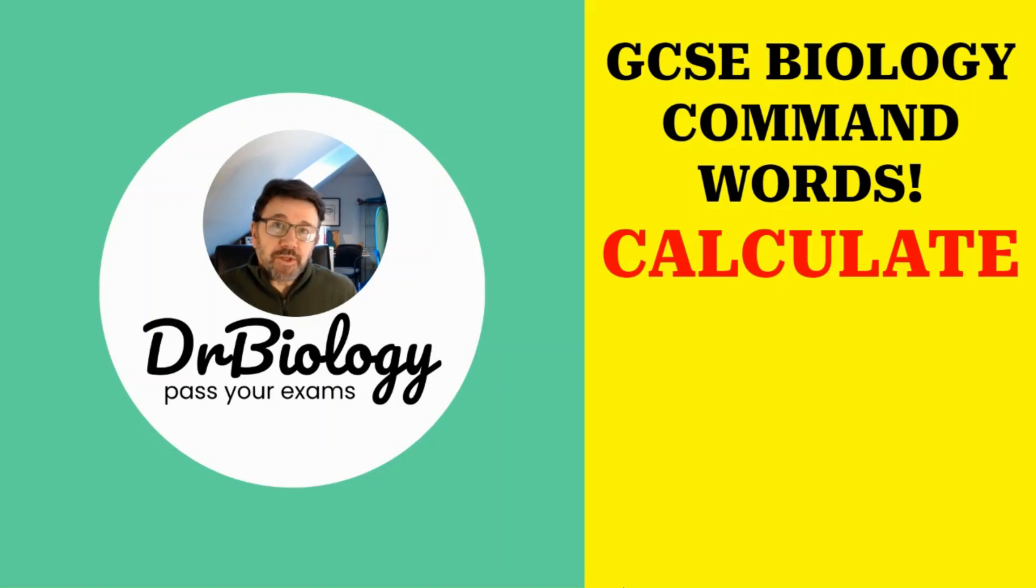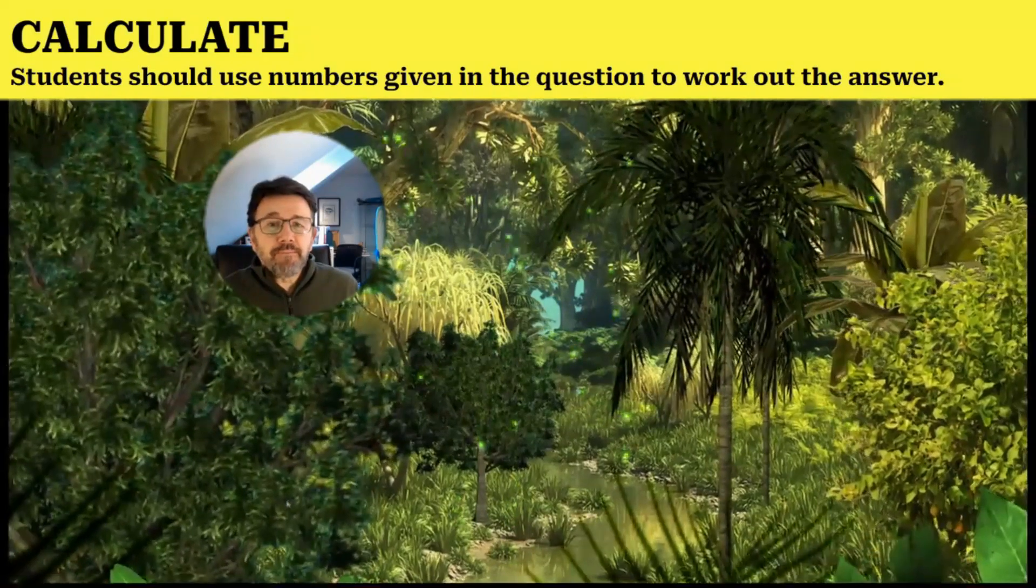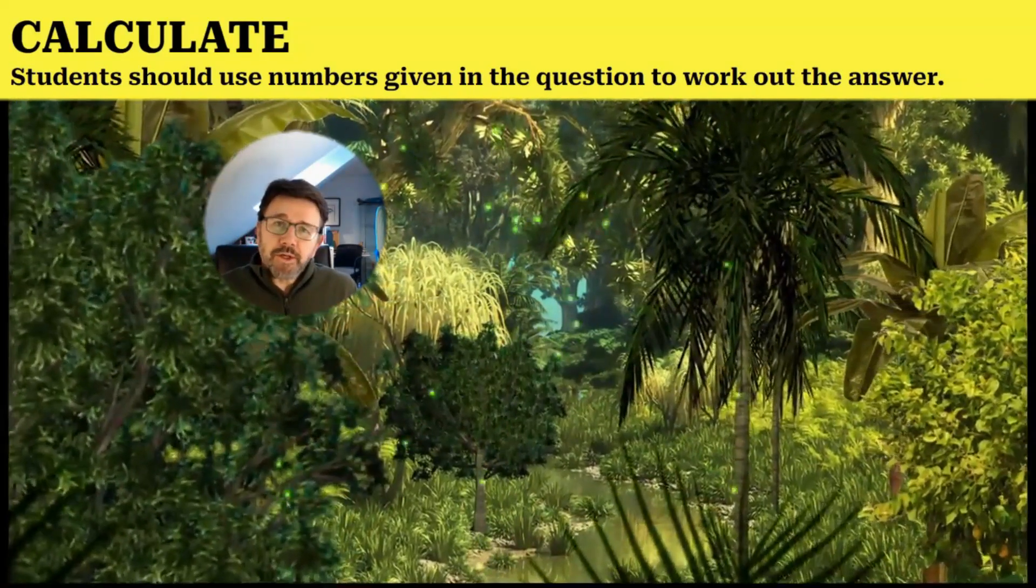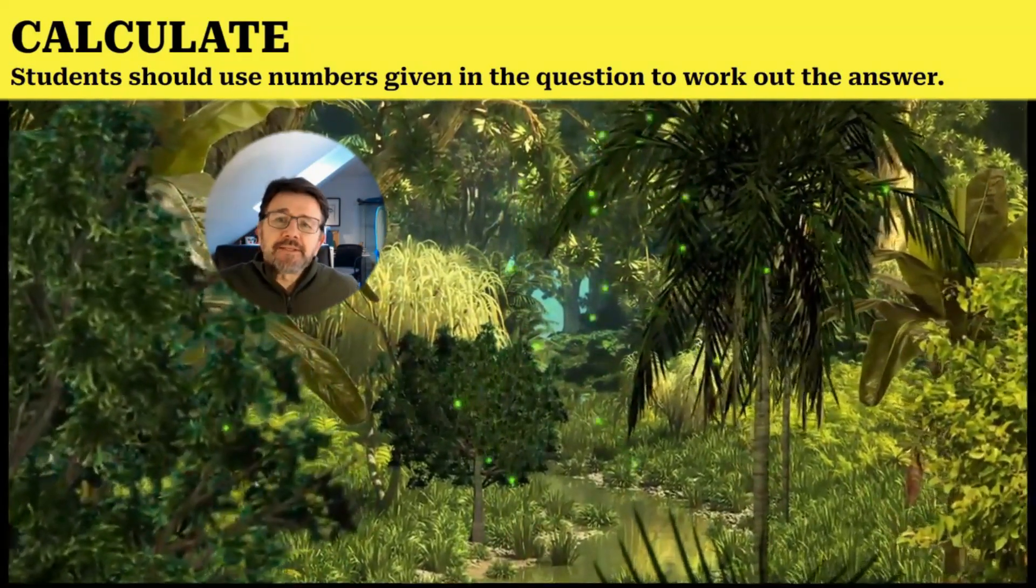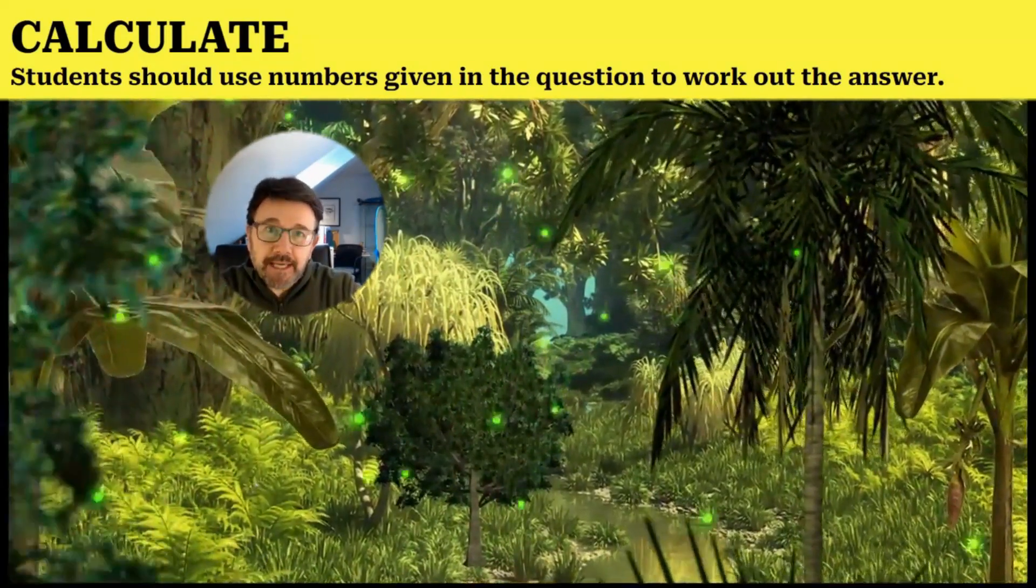GCSE biology command words: Calculate. Students should use numbers given in the question to work out the answer. Obviously, you're going to need your calculator.